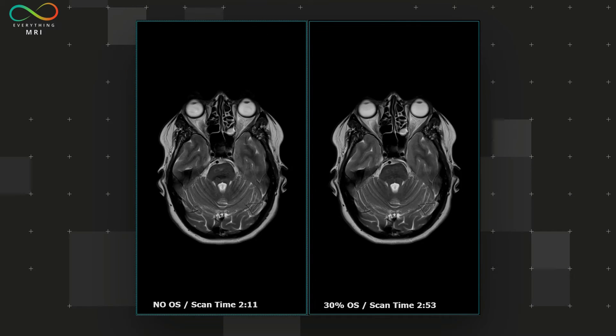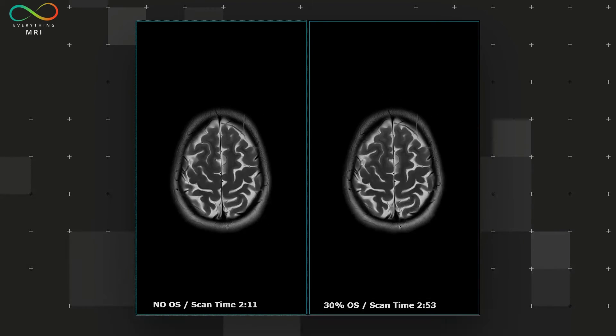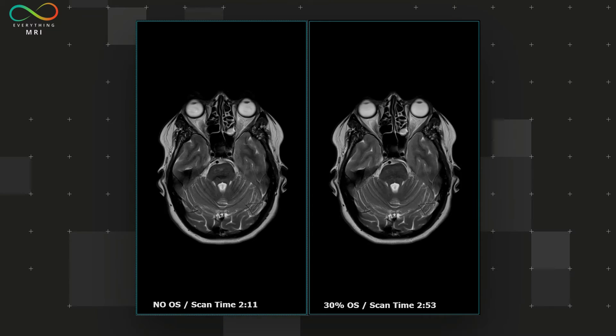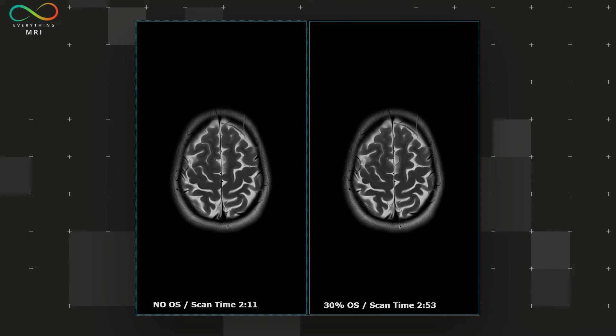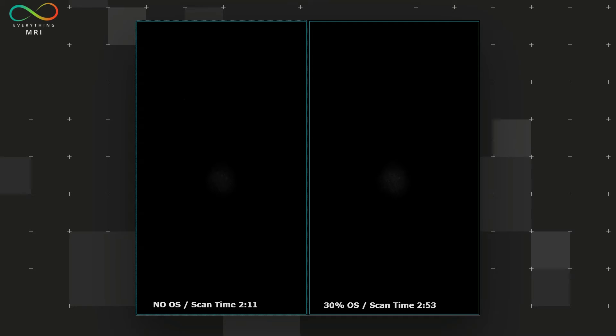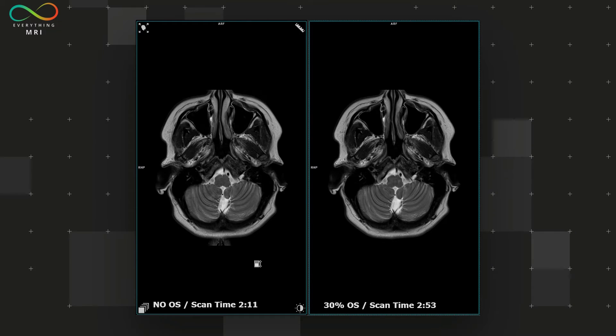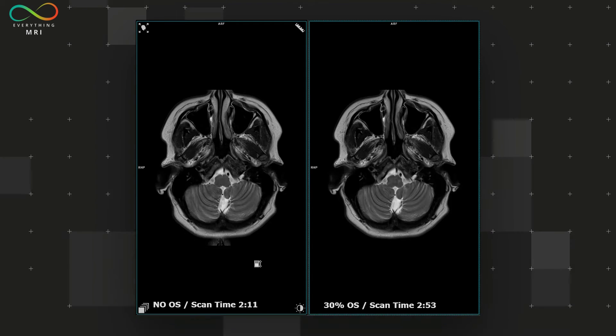Here we have two axial Turbo Spin Echo T2 images, both with a phase encoding direction AP. The one on the left lacks oversampling and thus has a shorter scan time, while the one on the right incorporates a small percentage of oversampling and therefore resulting in a longer scan time. So keen observers might have already noticed something I would find as peculiar probably. There you go, you might see it now.